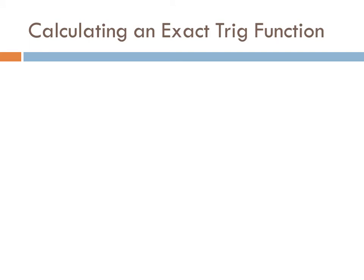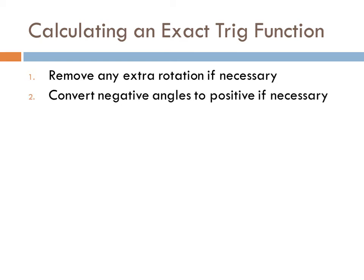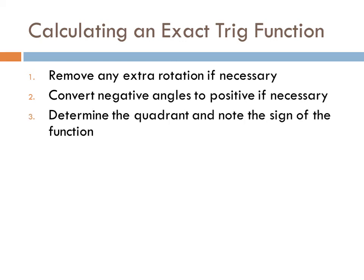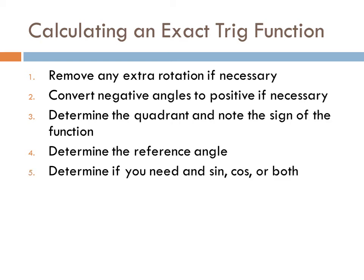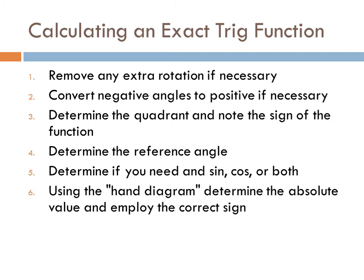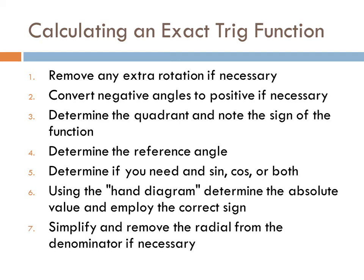Let's look at the steps for calculating an exact trigonometric function value. First, remove any extra rotation. Second, convert any negative angle to a positive angle. Third, determine the quadrant and note the sign of the function. Fourth, determine the reference angle. Fifth, determine if you need the sine, the cosine, or both. Sixth, using the hand diagram, determine the absolute value and employ the correct sign. Finally, simplify and remove the radical from the denominator if necessary — seven steps.